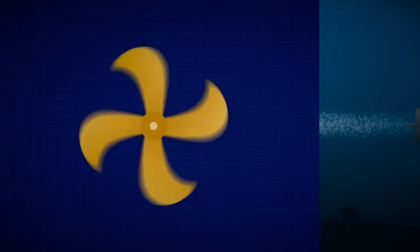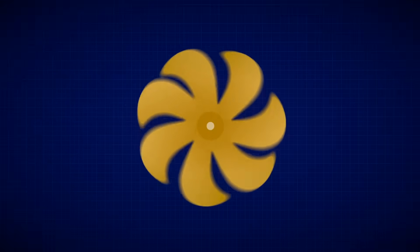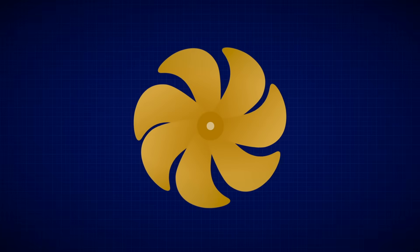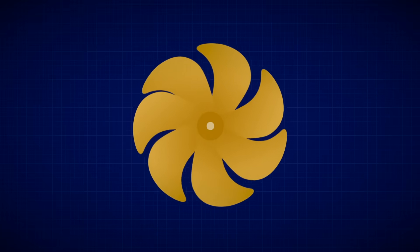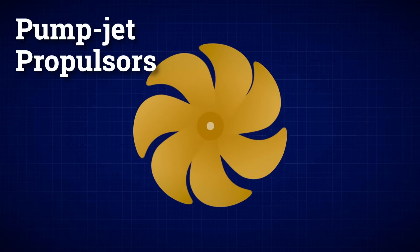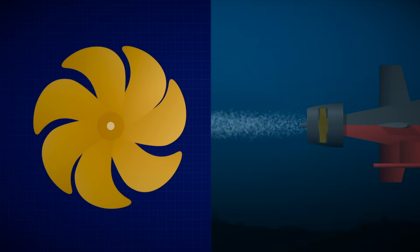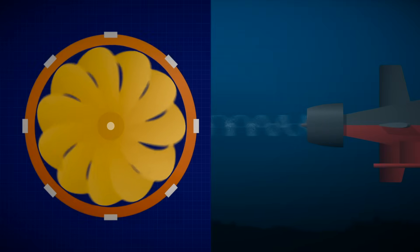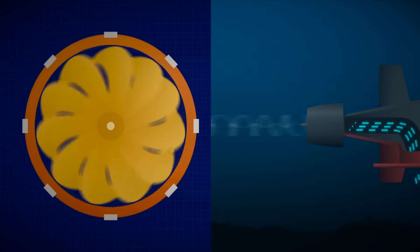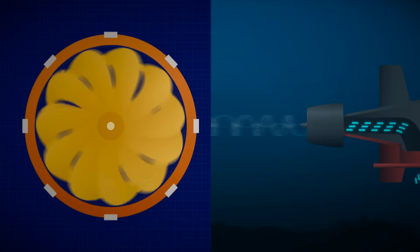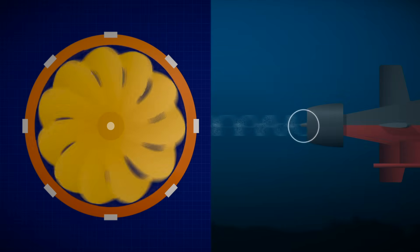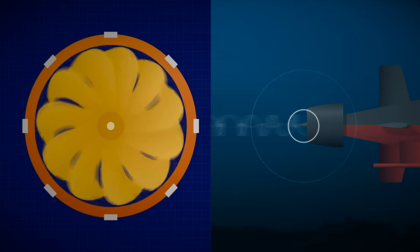To tackle this, modern submarines use specially shaped propeller blades, often with larger diameters and slower rotation speeds. Some even use pump jet propulsors, a sort of shrouded propeller system that cuts down on cavitation and mutes sound. Less cavitation means less noise, and that's the ultimate goal for submarine stealth.